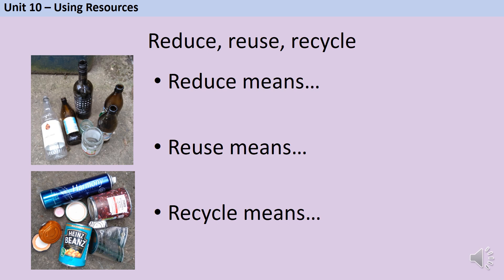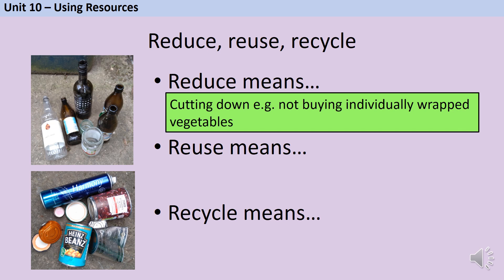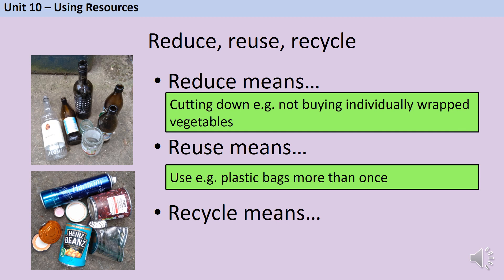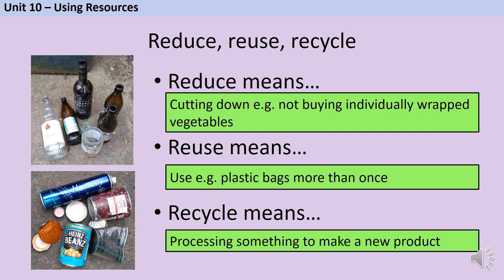We can increase the efficiency with which we use different materials in three key ways. Firstly, we can reduce our usage by cutting down on how many raw materials we use — for example, not buying individually wrapped vegetables. Secondly, we can reuse things, such as taking a bag for life to the supermarket, reducing the number of plastic bags that need to be made. Finally, we can recycle something, which means processing it to make a new product.